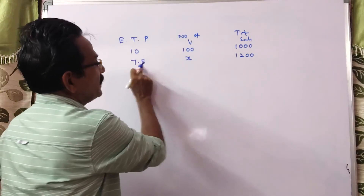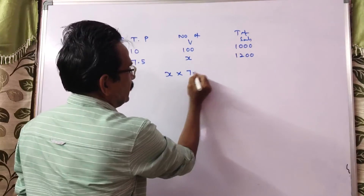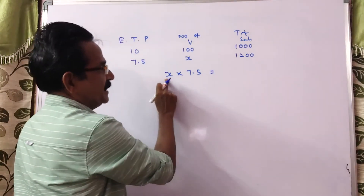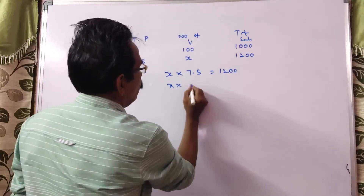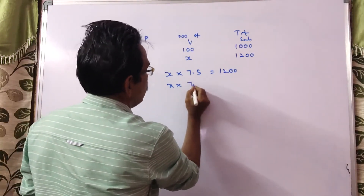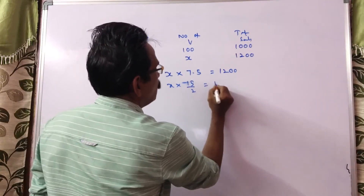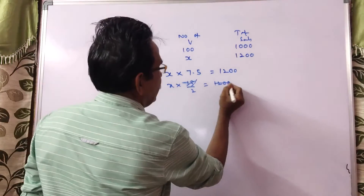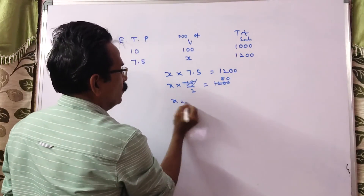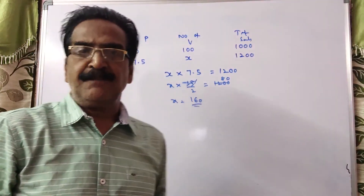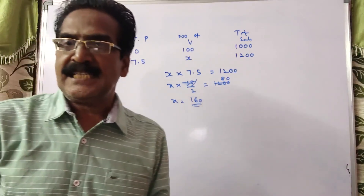Now, number of visitors into each ticket price is equal to total business. So X into 15/2 is equal to 1,200. Therefore X is equal to 1,200 times 2/15, which gives X equal to 160. Earlier it was 100, now the present number of visitors is 160.